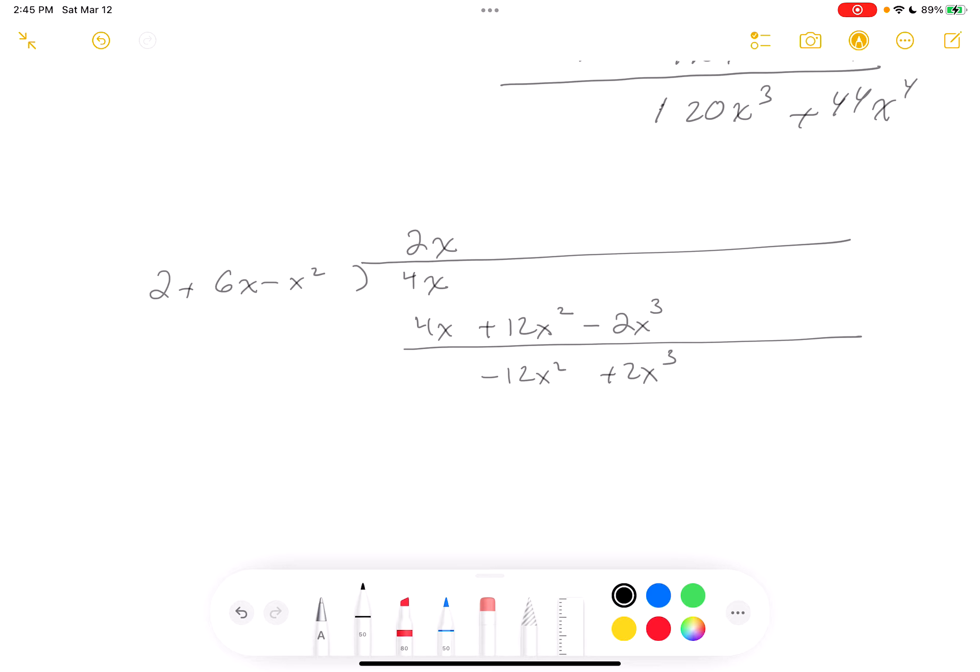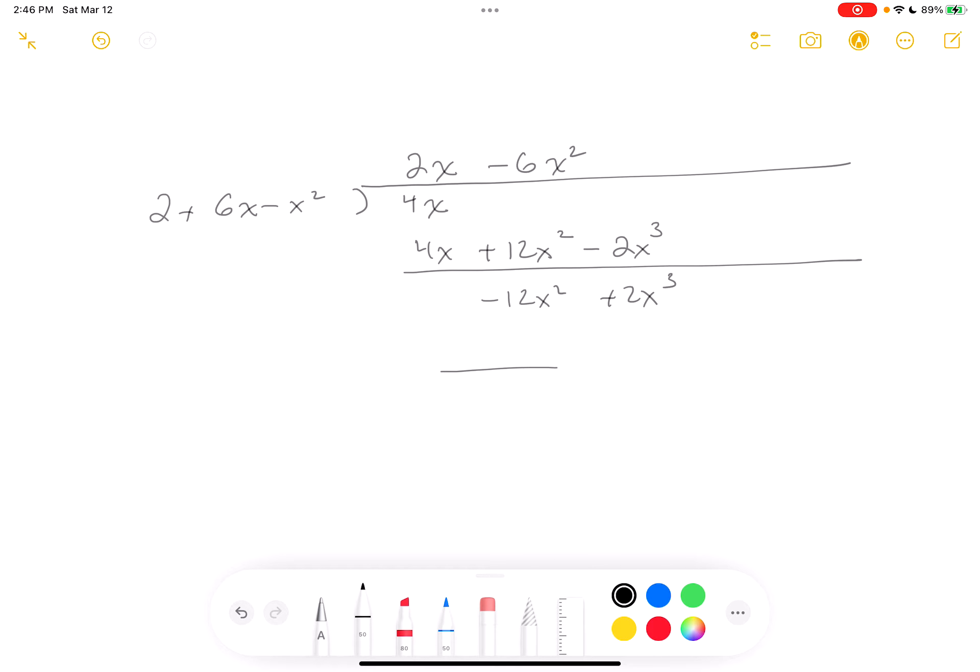You're now going to repeat the process. What do you get here? Minus 6X squared. Let's multiply it out, and hopefully it's not going to be too bad. The numbers so far are working out pretty nicely. You get minus 12X squared. Let's see. Minus 36X cubed plus 6X to the fourth. Subtract. What do you get? 38X cubed minus 6X to the fourth.